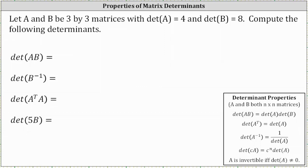Let A and B be three by three matrices, with the determinant of A equal to four and the determinant of B equal to eight. We're asked to compute the following determinants, which we will do using the properties shown here on the right.